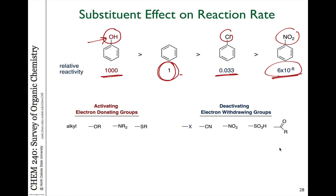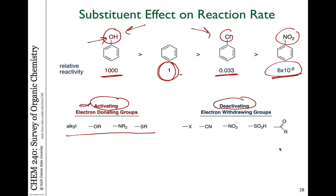Some groups deactivate the reactivity of the benzene ring towards electrophilic substitution, and some groups activate it. That is, some groups speed up the reaction relative to benzene, and some groups slow it down. The activating groups are all those that are electron donating — alkyl groups, or heteroatoms which have lone pairs that can donate into the ring through resonance. Those all activate and increase the reaction rates of benzene rings towards electrophilic species.